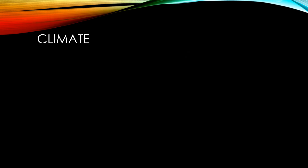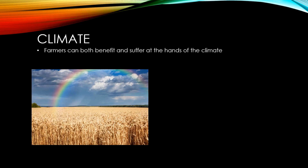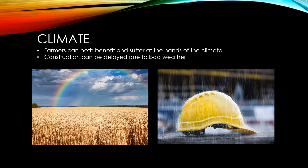For farmers, the weather can be the difference between bumper crops and failed crops. If crops fail, there will be a left shift of supply, but if there is a bumper crop, then there will be a right shift of supply. Bad weather can also result in delays in the construction industry, and therefore a left shift of supply.